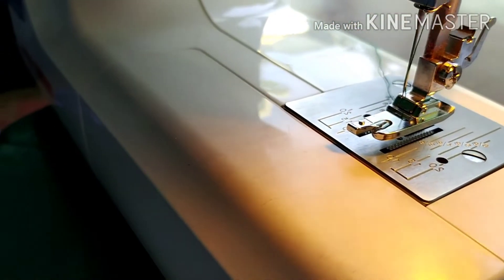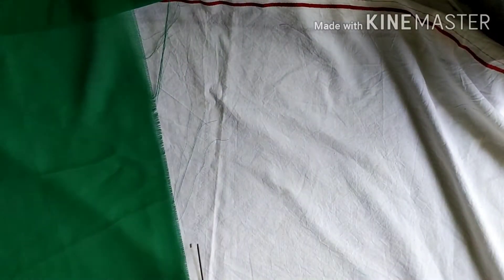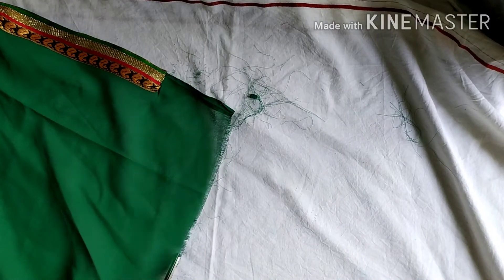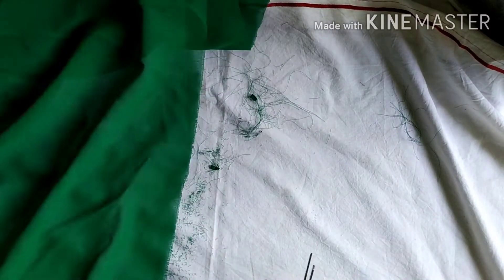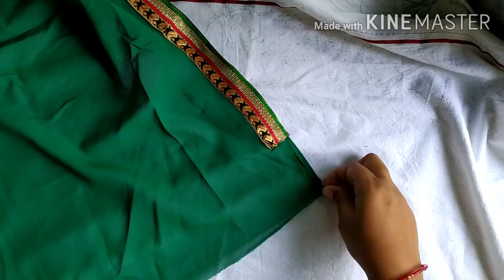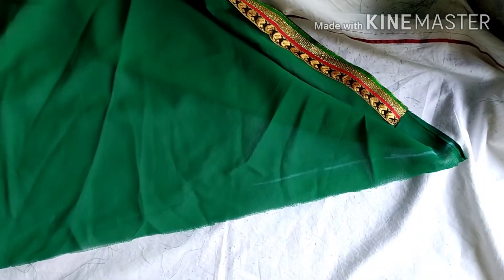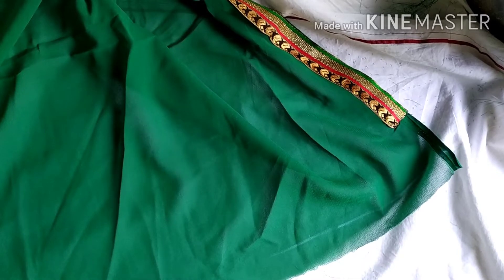I will share the machine details in the next video. First, we have to trim the threads. Now we need to fold and estimate, then fold and draw the line.